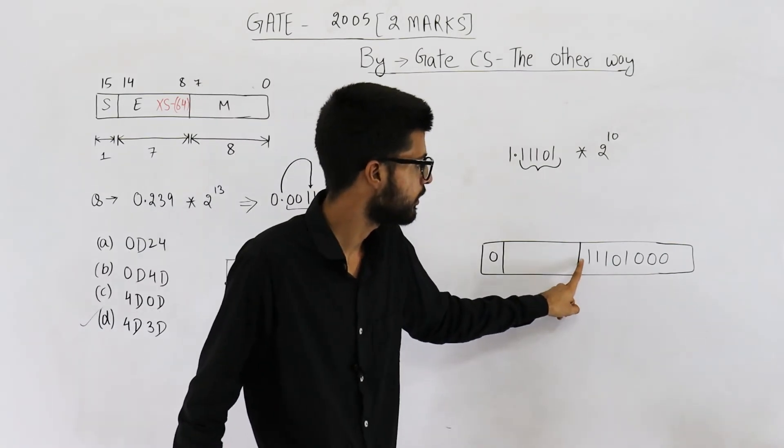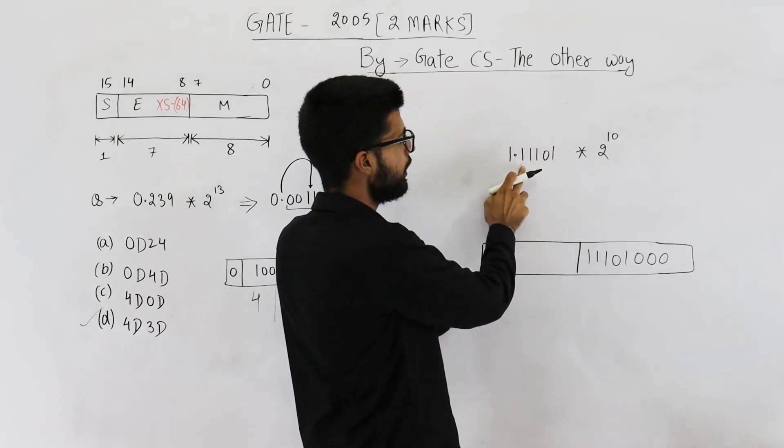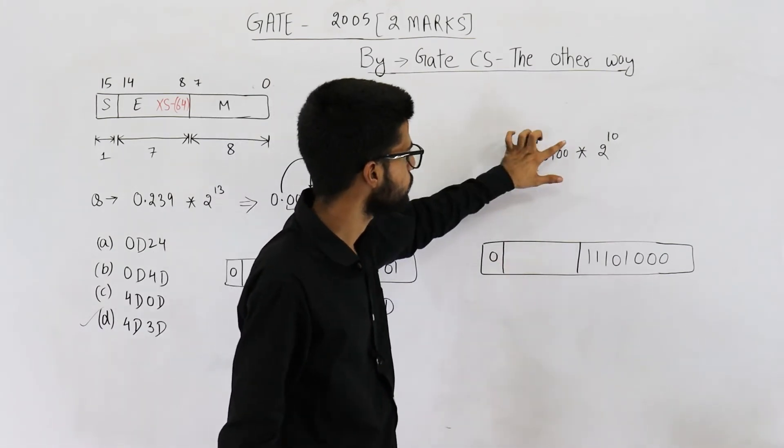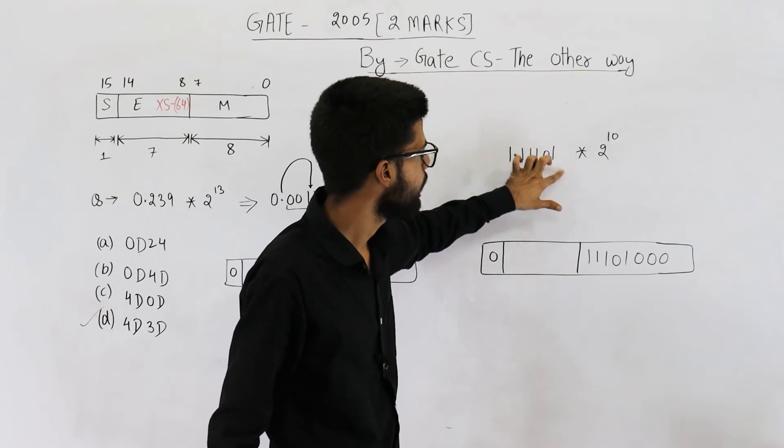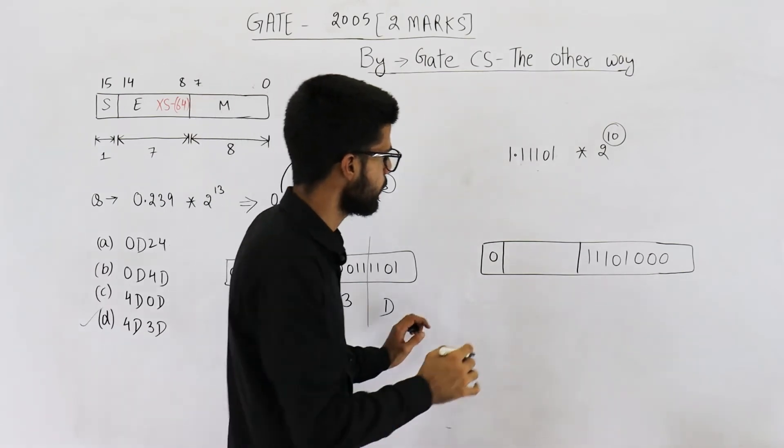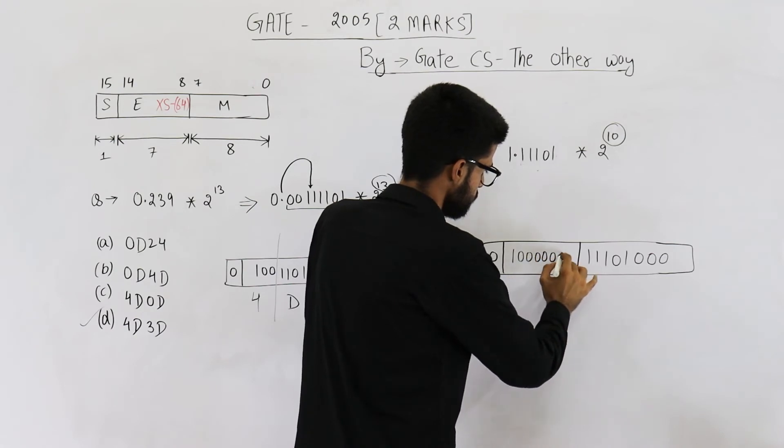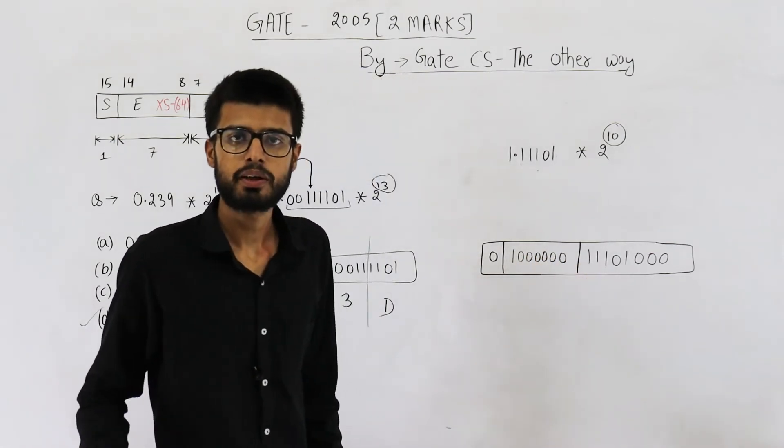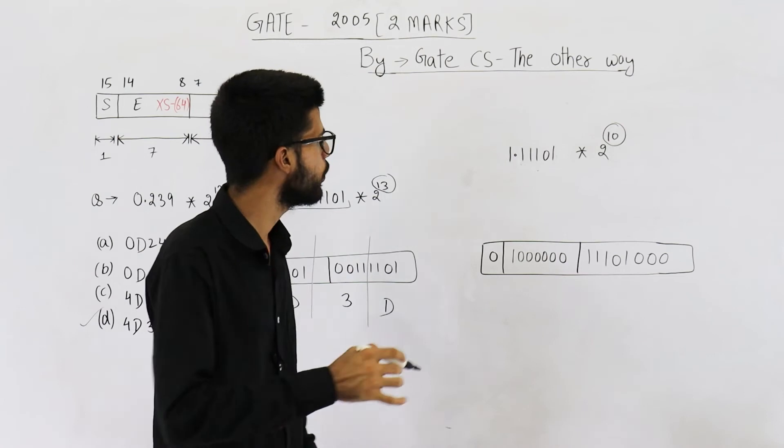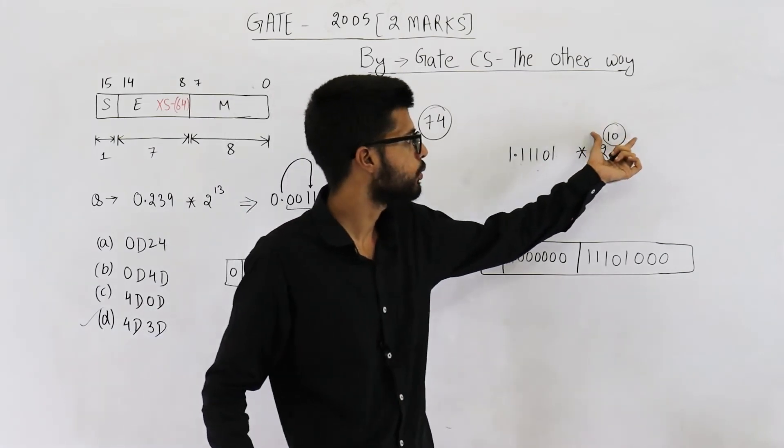This is mantissa in 8 bits. Please don't add zeros to this side. Zeros have to be added here because this number is actually 1.11101000 and so on. There are infinite zeros. So we are representing this. Now this exponent has to be saved in XS64 format. This is 64. If we want to save 2^10 in XS64, we are actually going to save 74. Biased exponent is 74. Actual exponent is 10.